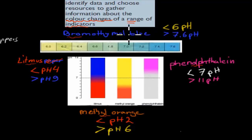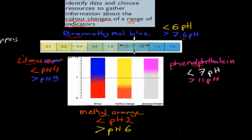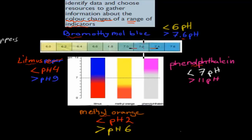For example, bromothymol blue: if it had a pH of less than 6, it would always be yellow. If it had a pH of more than 7.6, it would be blue. And in between, it had a different range of colors. For example, at 6.2 it would be darkish yellow, at 6.8 light blue, at 7.2 slightly darker blue, and at 7.6 dark blue. So, in between 6 and 7.6, there's a range where you can see what kind of pH it has.